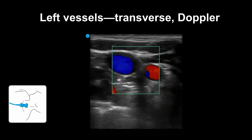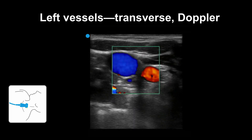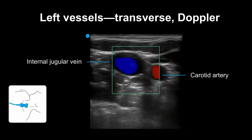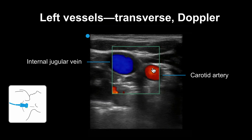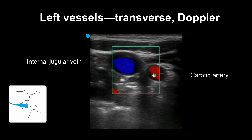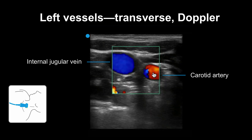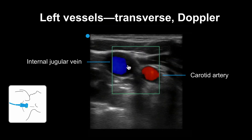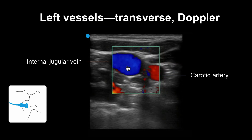Here is that same view approaching on the left. This time the operator has used Doppler over the vessels. Here again you see the internal jugular vein and the carotid artery lighting up on Doppler. The artery appears red, which means that relative to the probe, there is blood flowing towards it in this vessel, compared to the vein which appears blue because the blood is flowing away from the transducer.